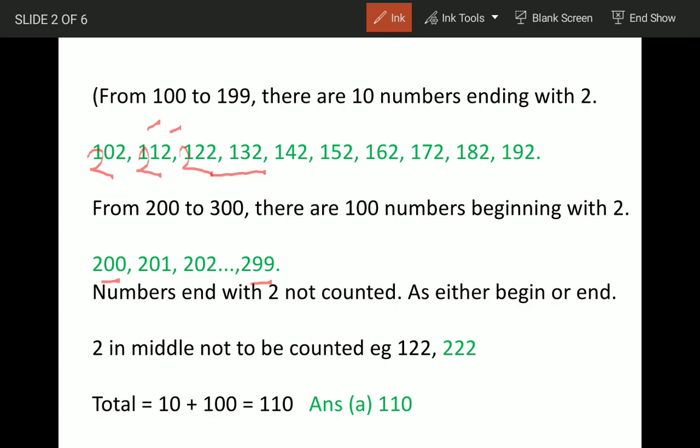Since these are already counted here, we will not count these numbers for 200 series. So total numbers are going to be 10 here, 100 here is 110, and answer is option A.